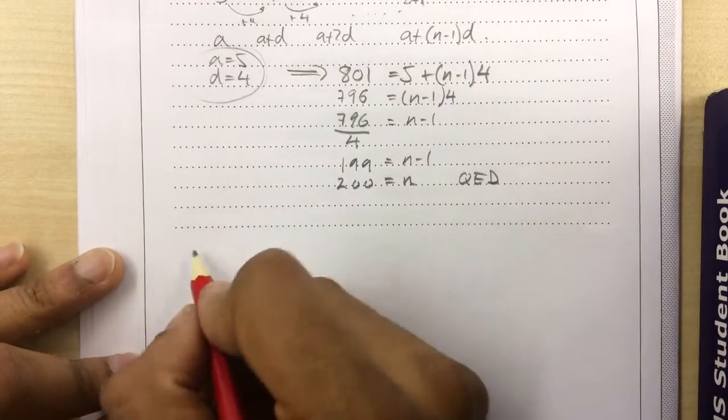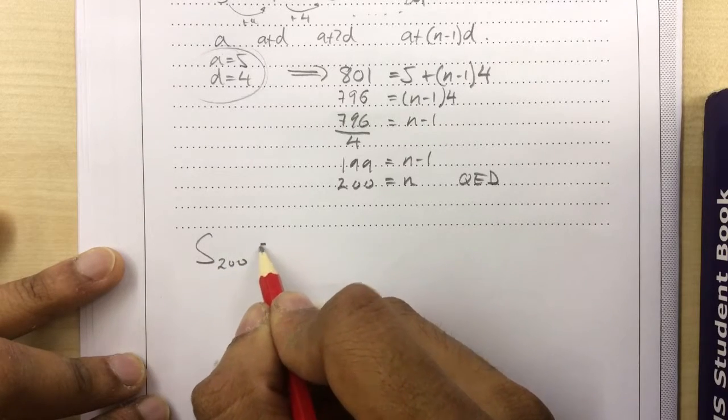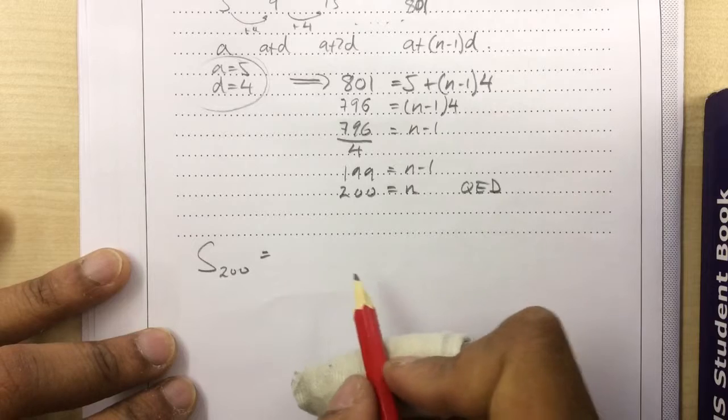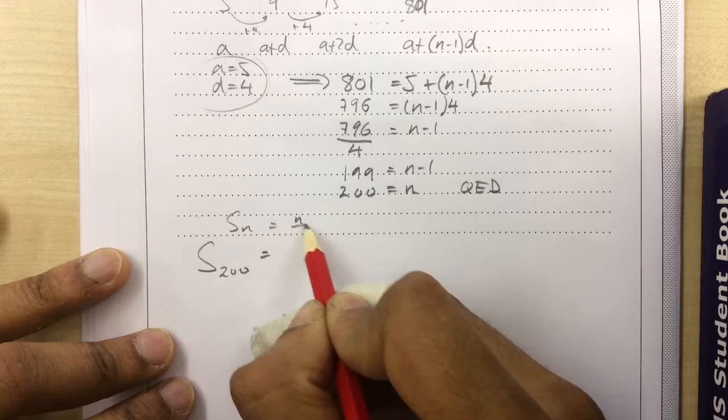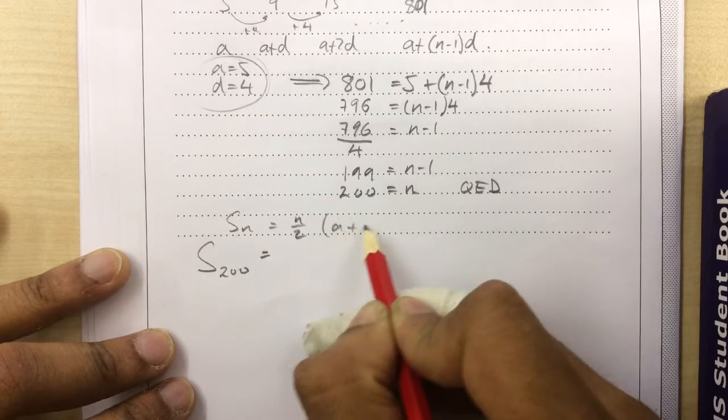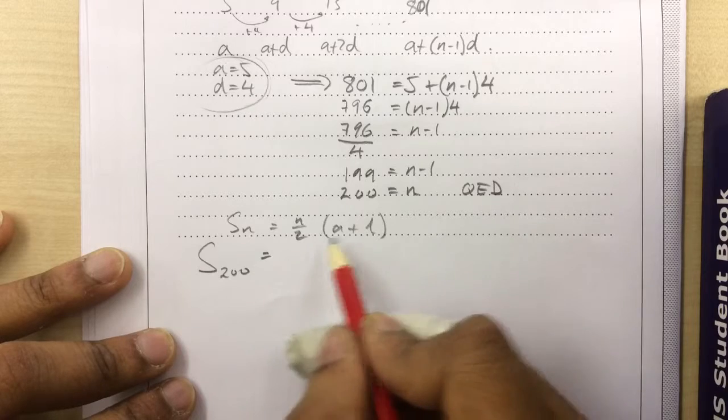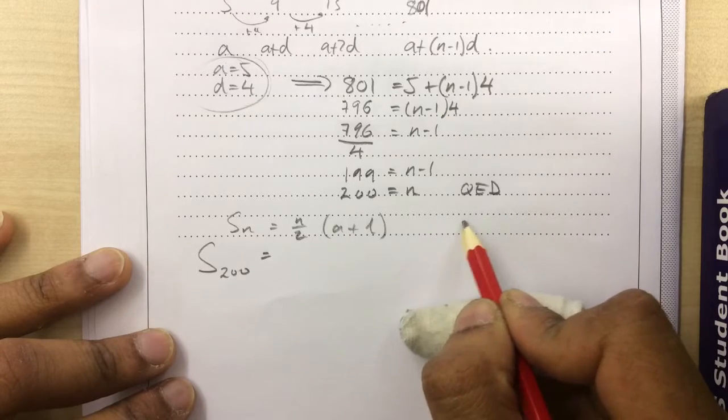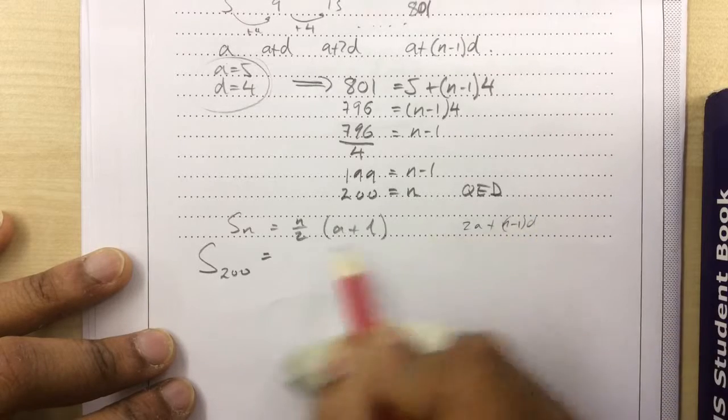So what we want to find is sum 200 equals. Now I'm going to use this formula: S_N equals N over 2, A plus L—first and last. So there's another way you could do 2A plus N minus 1 times D. Either works.